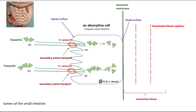For absorption of dipeptide and tripeptide, to transport these molecules into the absorptive cell, we use a hydrogen ion symporter. This means the transporter moves, for example, a dipeptide and a hydrogen ion together into the cell in the same direction — hence symporter. That is secondary active transport. Inside the cell, the dipeptide is broken down into two amino acid molecules, and each amino acid is then transported through the basal surface by facilitated diffusion.